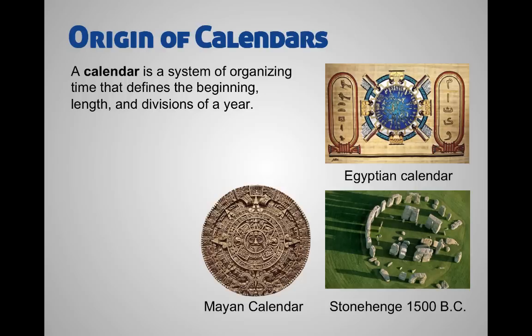Thinking about ancient civilizations and why was it important for them to keep track of these revolutions and the years and the months and the days, we have to talk a little bit about calendars. Calendars are just a way of organizing time. It defines the beginning, the length, and the divisions of a year. You'll notice these three ancient calendars: the Mayan calendar, Egyptian calendar, and Stonehenge. They're not exactly like the calendars we have today, but different positions on there correspond to different times of the year, whether it's the solstices or equinoxes or other events.